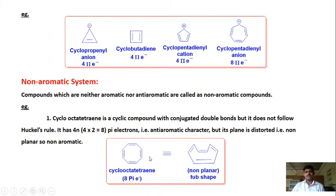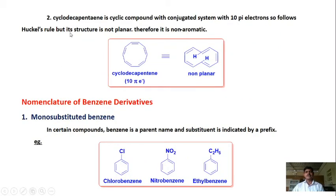The second example is cyclodecapentaene. It is a cyclic compound with conjugated double bonds and ten pi electrons. It follows Hückel's rule (4×2 + 2 = 10). However, it is not planar because the hydrogens come above and below the plane of the ring. Since the compound is non-planar, it is not an aromatic compound and is classified as non-aromatic.